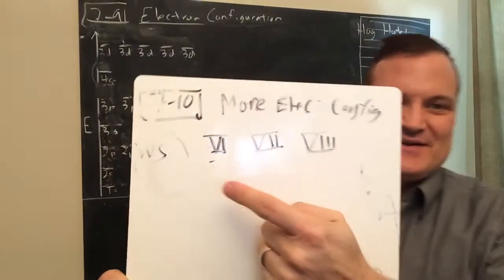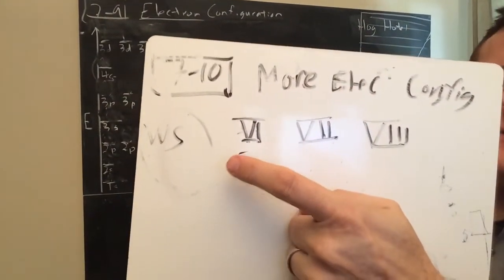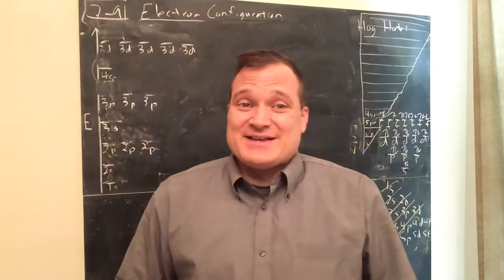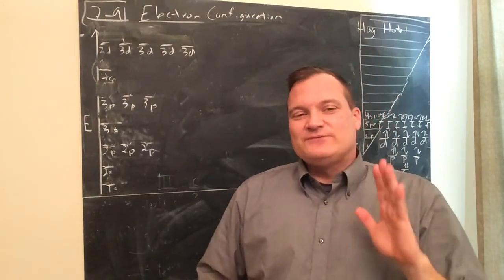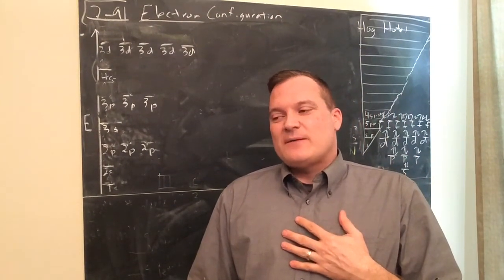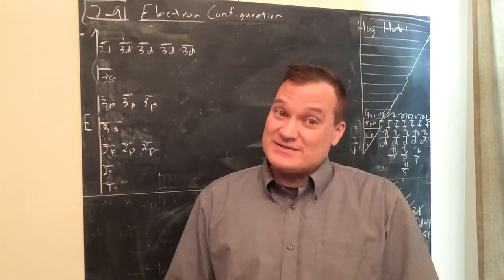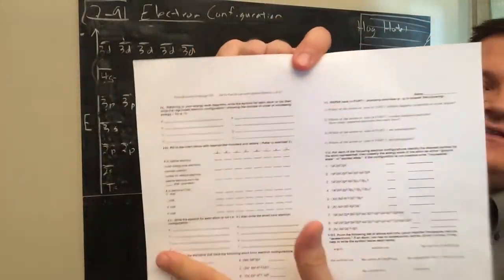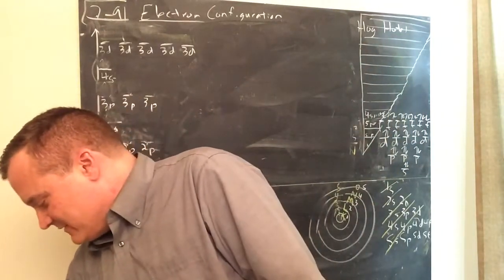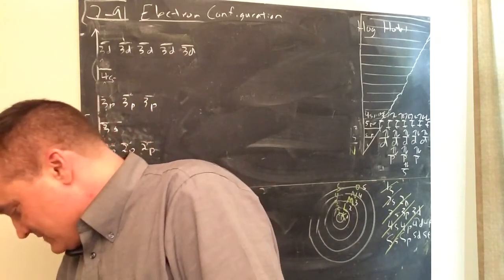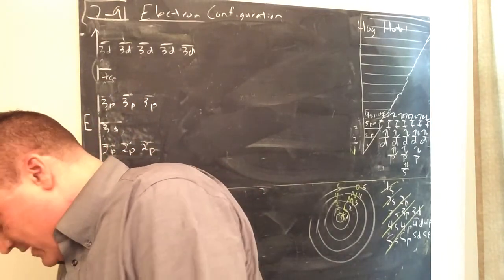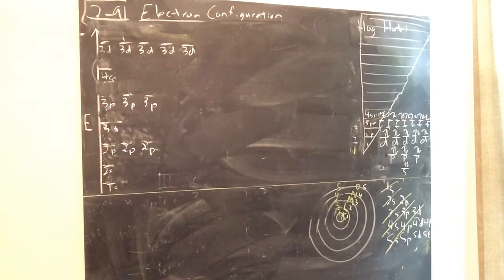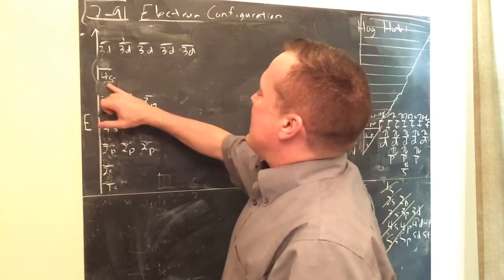All right, 7.10 — this is the last one. Now, more electron configuration: six, seven, and eight on the worksheet you'll do now. It takes a lot because there's a lot of information, but what we're doing right now is probably one of the toughest things in the chapter. It's not that bad — it's just learning the material, and then everything will come from it.